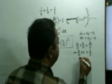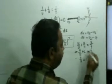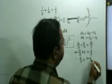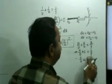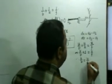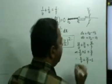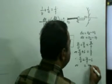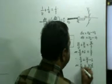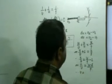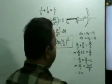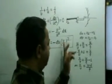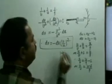From here, u/v = u/f minus 1, which equals (u minus f)/f. So v/u = f/(u minus f). This magnification v/u is what we needed. Now taking its reciprocal, u/v = (u minus f)/f.